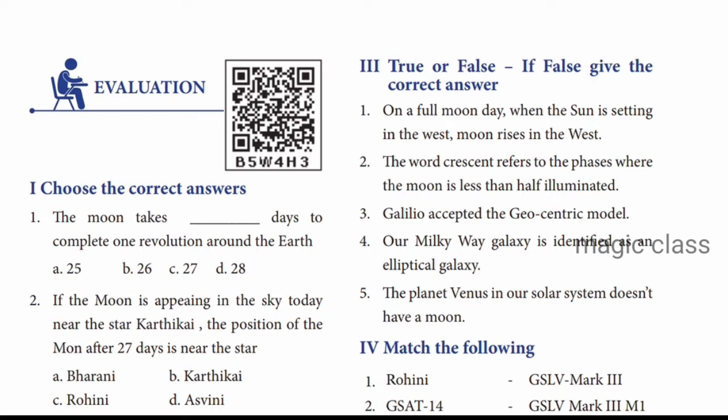Question number 3: Galileo accepted the geocentric model. The answer is false. Galileo did not accept the geocentric model. Geocentric means earth is at the center and all planets and the sun revolve around the earth - Galileo did not accept this. Question number 4: Our Milky Way galaxy is identified as an elliptical galaxy. Answer is false - our Milky Way galaxy is not elliptical but is a bar-shaped spiral galaxy.